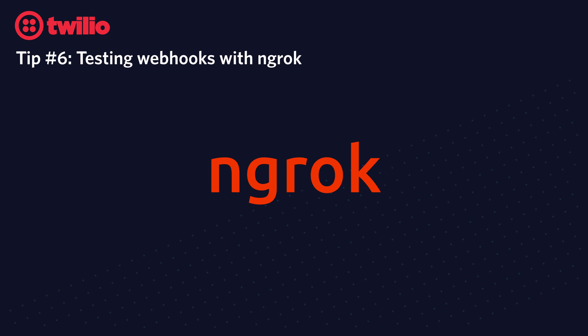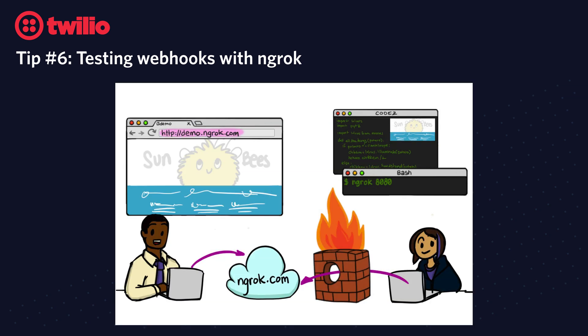ngrok creates a secure tunnel from your code running on localhost out to the public internet through a URL that ngrok gives to you — in this image, it's demo.ngrok.com. When the user on the left visits demo.ngrok.com, they reach the code that is running locally over on the right.